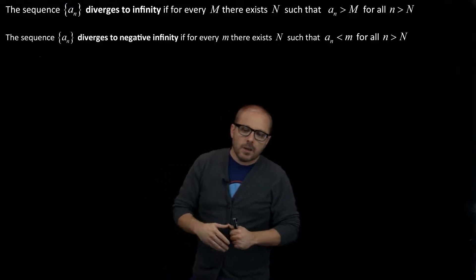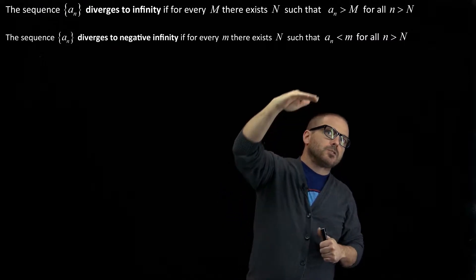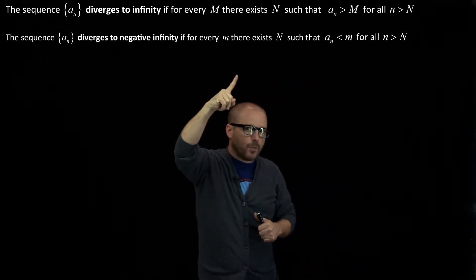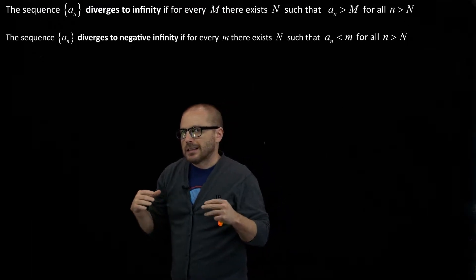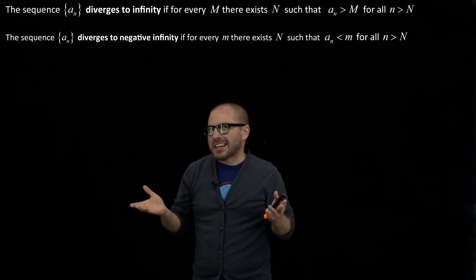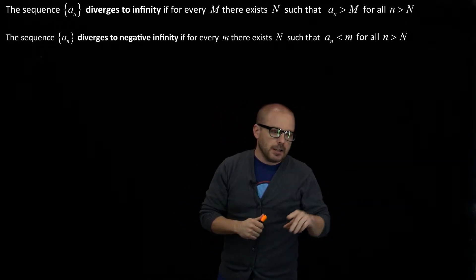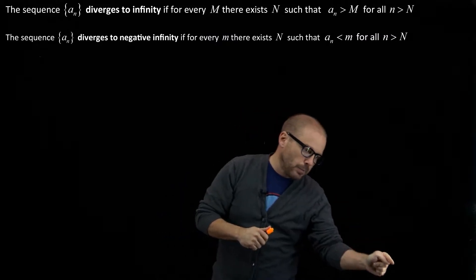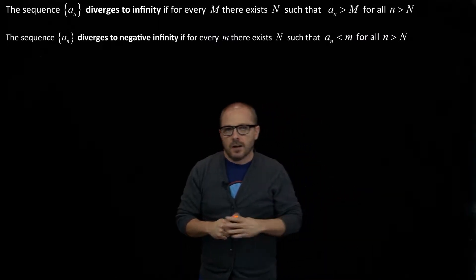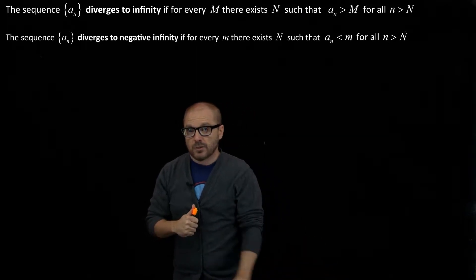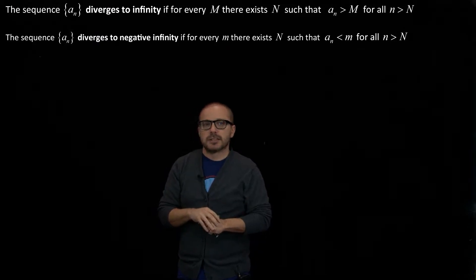We saw this with functions. As you go farther and farther out, if the values just grow and grow without bound, we're going to say that the limit equals infinity — but what we're really saying is that it diverges off to infinity. Likewise, if they get smaller and smaller without any lower bound, just keep going down and down, then those things we're going to say are diverging to negative infinity.